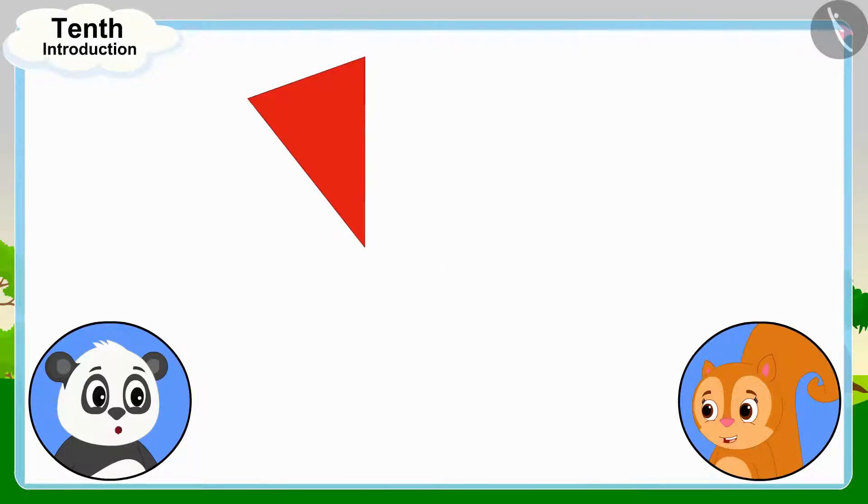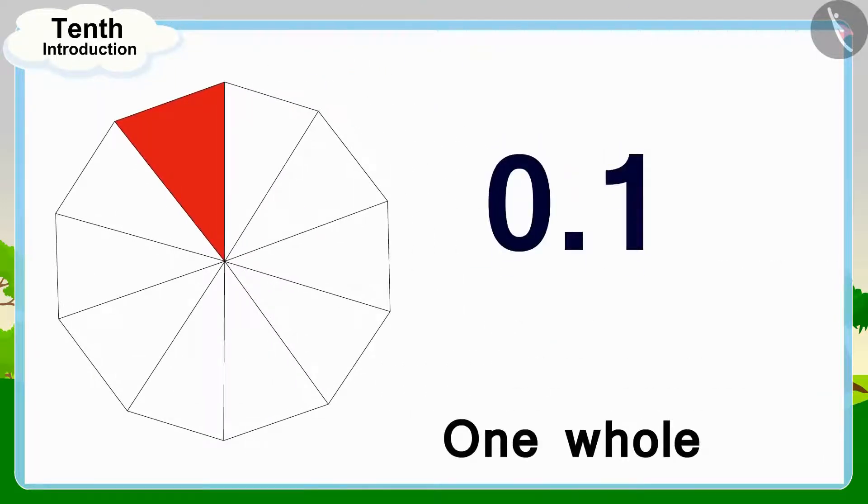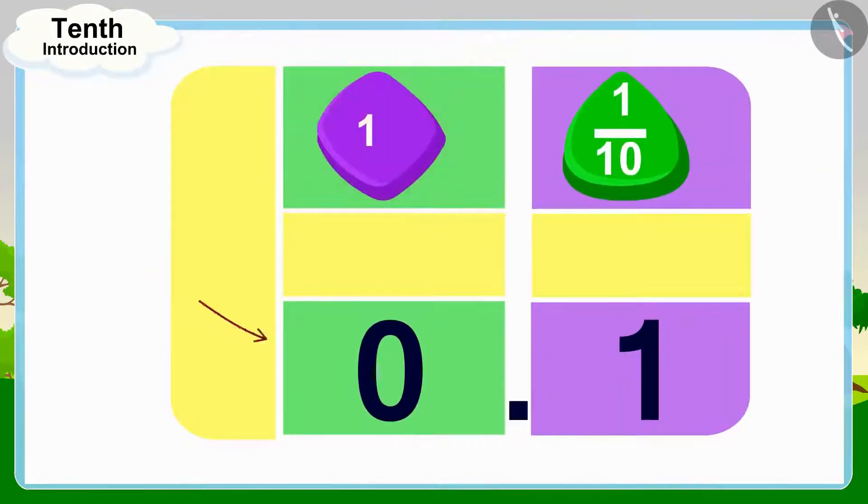And we write this after the decimal point like this. And because this fraction is less than one whole, we write the number 0 in the unit's place before the decimal point.